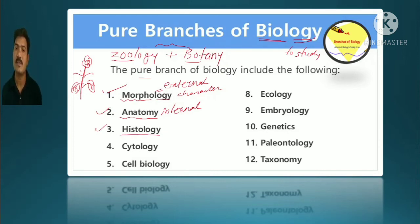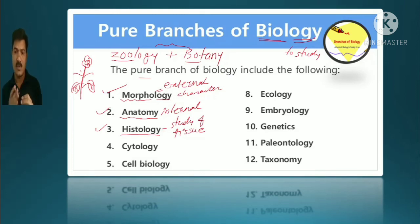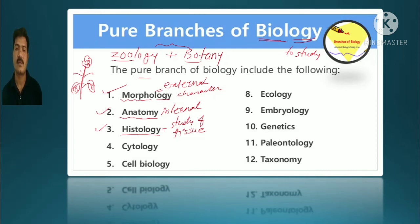Histology is also a very important branch. Histology is the study of tissues. Without histology we cannot understand how an animal works — its working mechanism. For example, transverse section of xylem in a plant, or TS of testis, liver, brain — cutting and observing internal organ structure is histology.